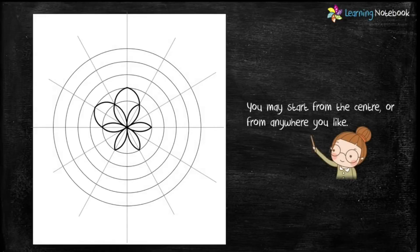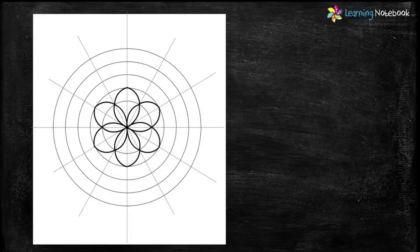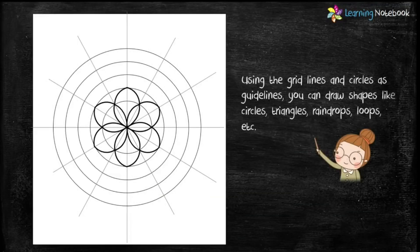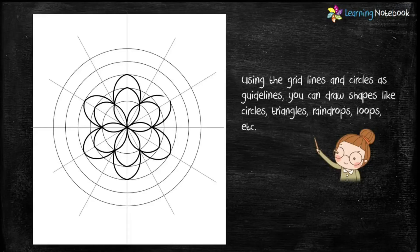Now you may start from the center or from anywhere you like, but it is best to start from the center. Using the grid lines and circles as the guidelines, you can draw shapes like circles, triangles, rain drops, loops, etc. Like here I'm drawing petals.